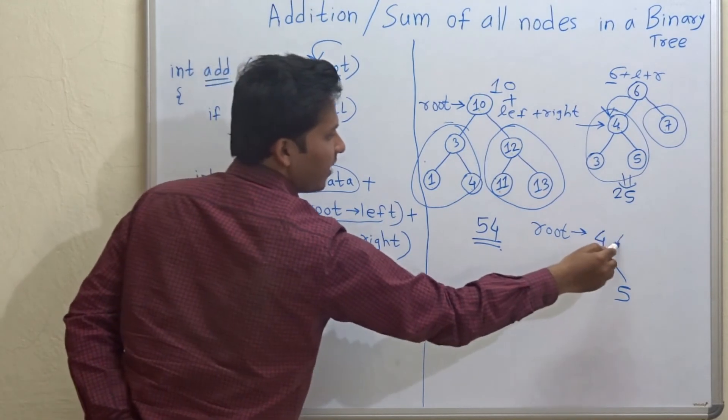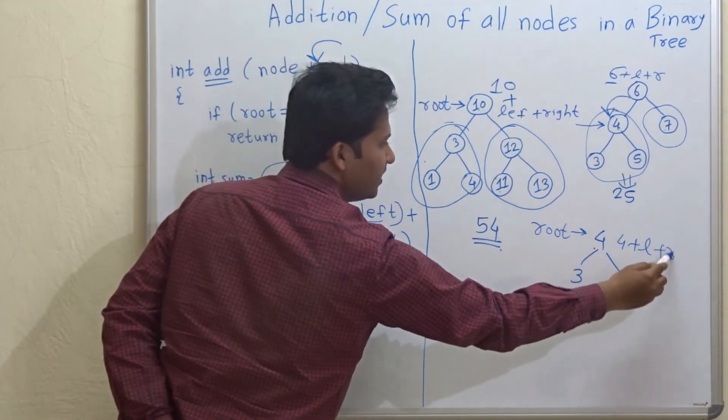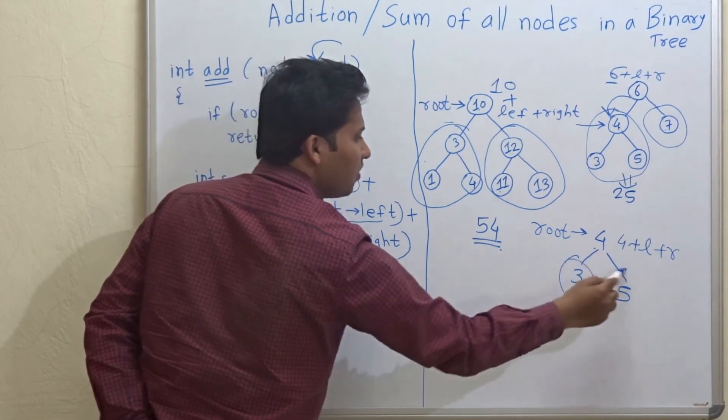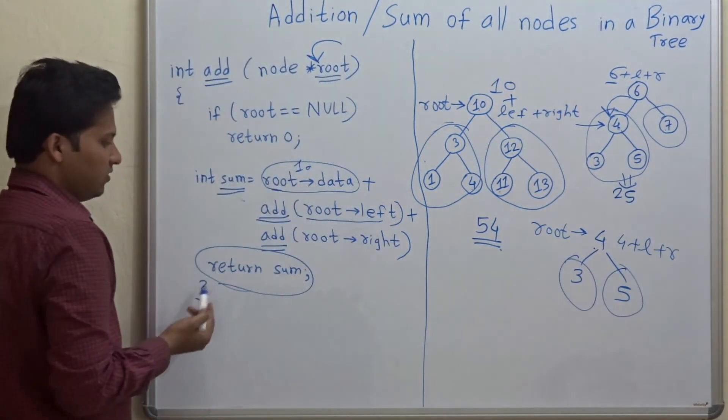Then again, it will happen like four plus left tree plus right tree. So in this way, all the sub trees are added recursively.